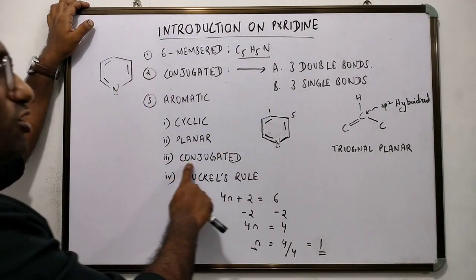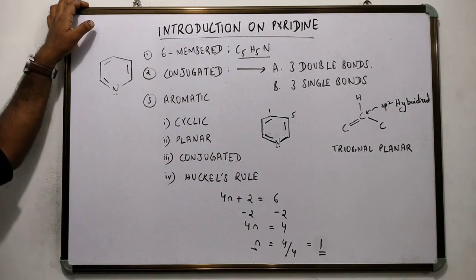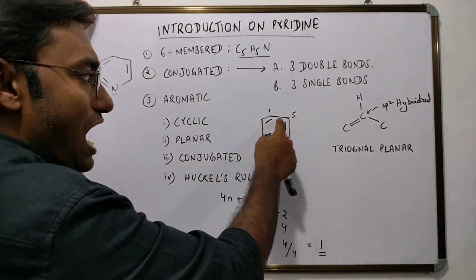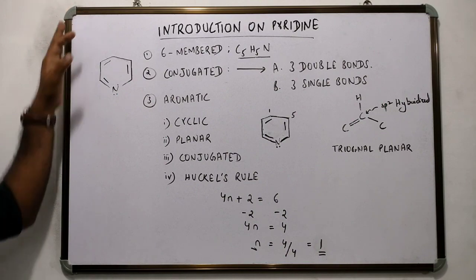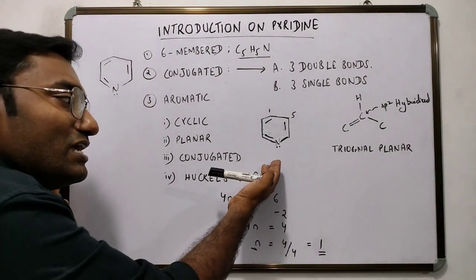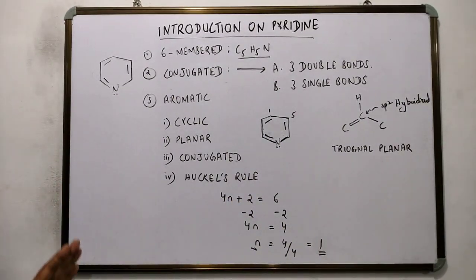Condition number 3: the molecule should be conjugated. As we can see, after every double bond there appears a single bond. The molecule of pyridine is no doubt conjugated.